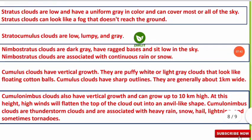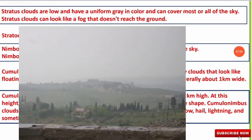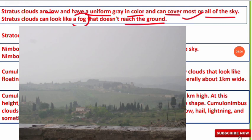Stratus clouds are low clouds, uniform gray in color, and they can cover most or all of the sky. These clouds can look like a fog that doesn't reach the ground — most fogs reach the ground, but stratus clouds appear like fog that stops above the surface.